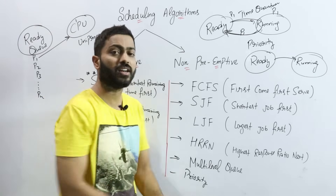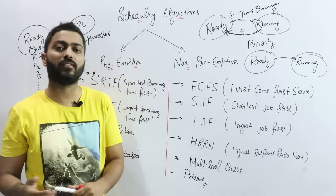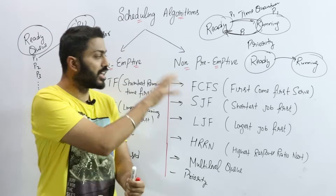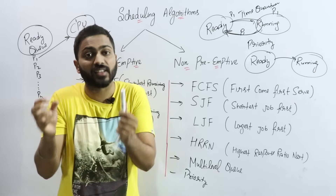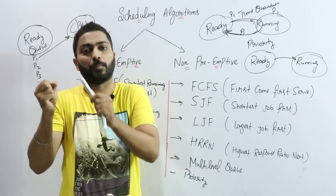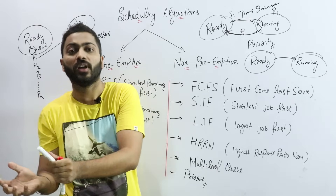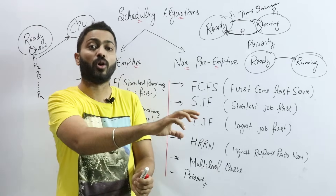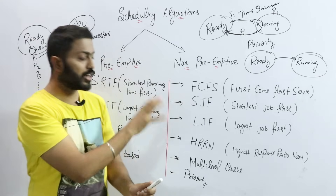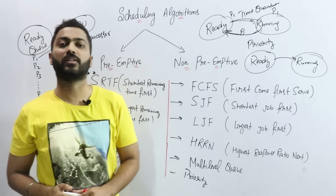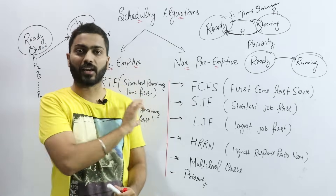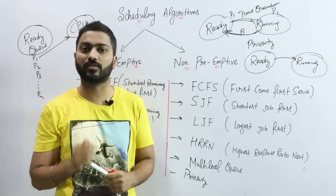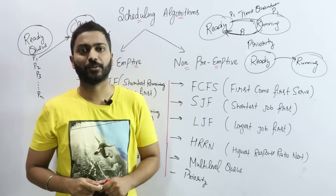Additionally, there are Multi-Level Queue and Multi-Level Feedback Queue algorithms. All these algorithms are used for selecting a process from the ready queue and placing it on the CPU. In the next video, we will solve numericals on each of these algorithms one by one. Thank you.